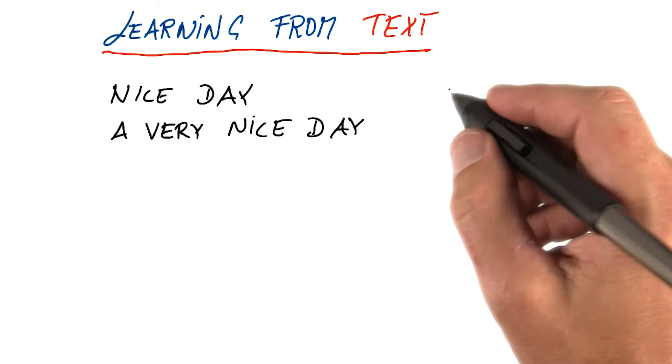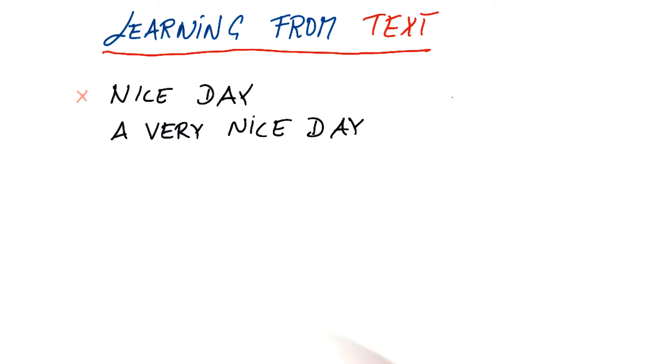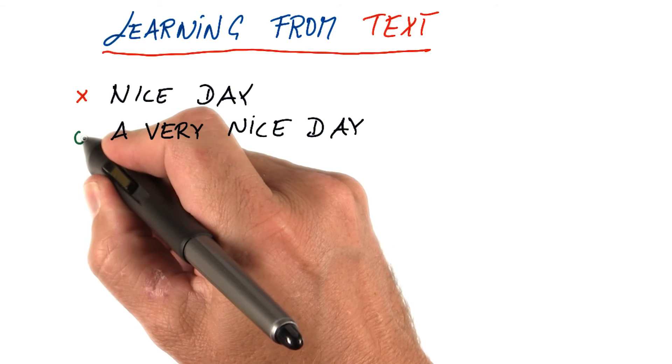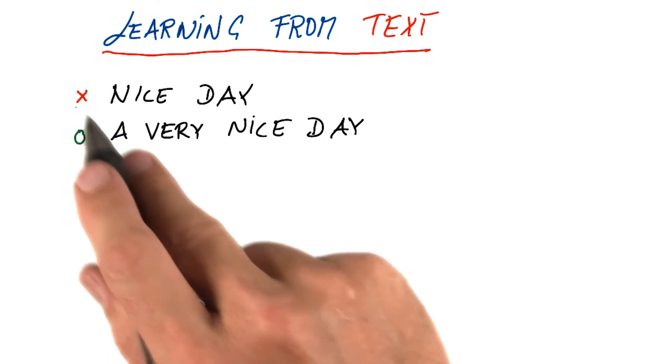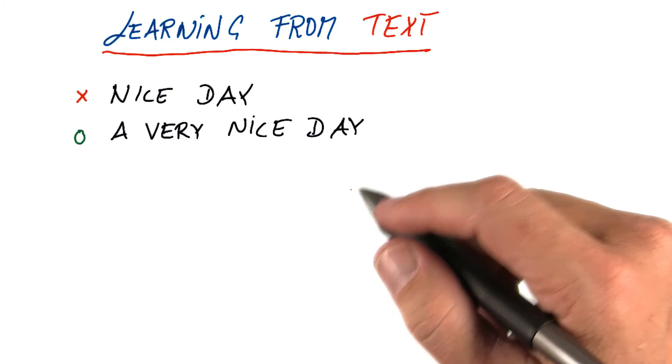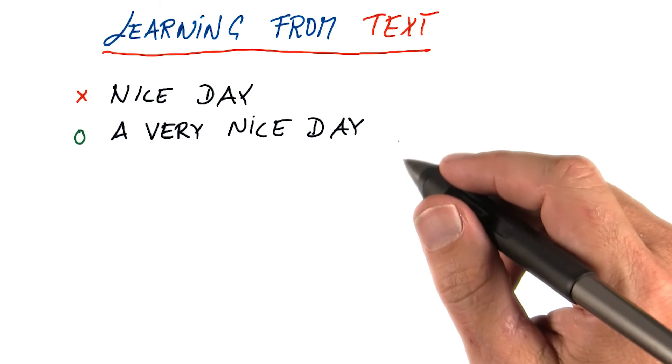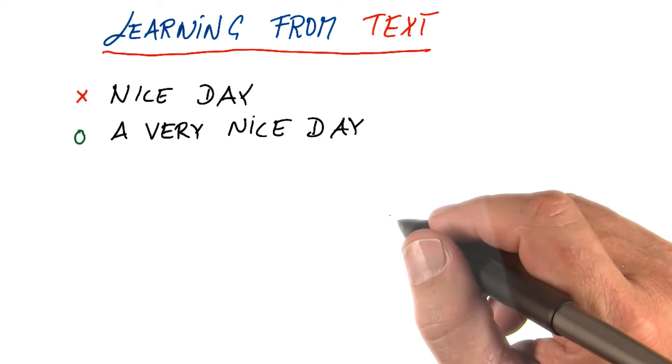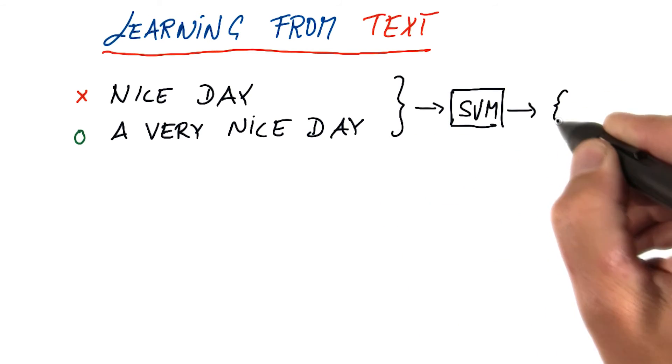And suppose for whatever reason, one is a positive example and one is a negative example, as indicated by this x over here in the circle. And maybe you have many of those. And you want to toss them into your favorite learning algorithm, like a support vector machine, to produce either output label.